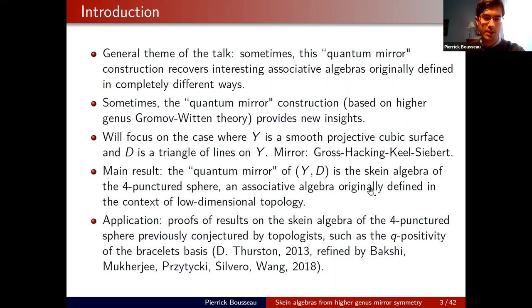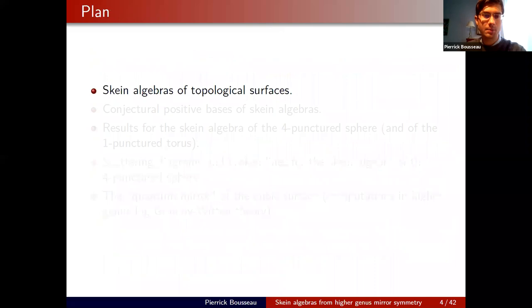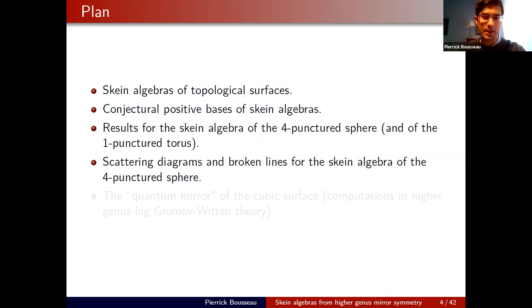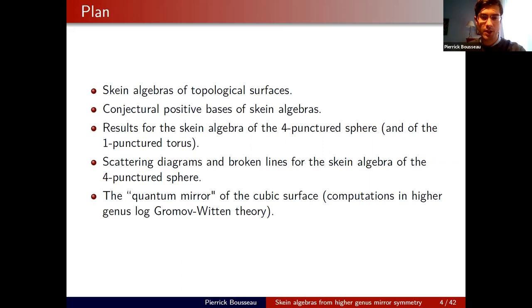As an application, we prove results about this particular skein algebra previously conjectured by topologists — a positivity property for a particular basis. There is a conjecture by Dylan Thurston about general skein algebras that we prove in the special case of the four-punctured sphere, and which for the four-punctured sphere has a refinement proposed by Bakshi, Mukherjee, Priston, Silvero, and Wang. The first part of the talk covers elementary low-dimensional topology — no mirror symmetry or SYZ fibrations yet — presenting questions that will later be solved using mirror symmetry inspired techniques such as scattering diagrams and broken lines.